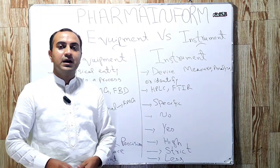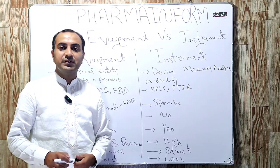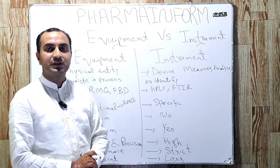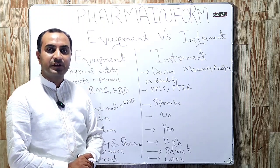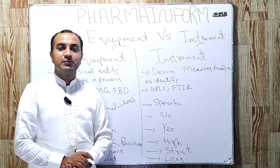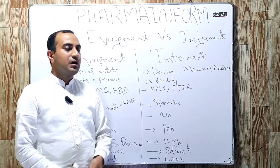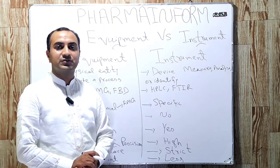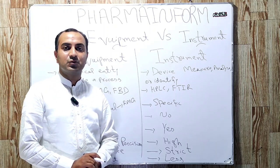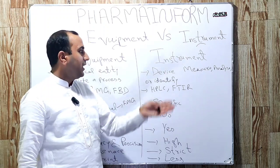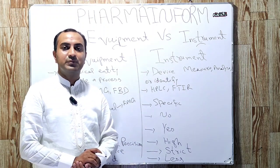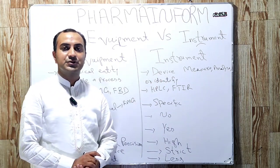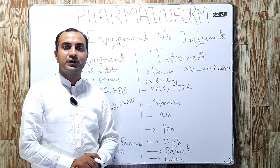The next difference is maintenance. The maintenance schedule for equipment has some leniency — we can skip maintenance for one day or some time and perform it later. But for instruments, delay in maintenance is not acceptable, because if maintenance is not performed on time, the results will be challengeable and may be compromised. So maintenance and calibration for instruments must be performed on time.